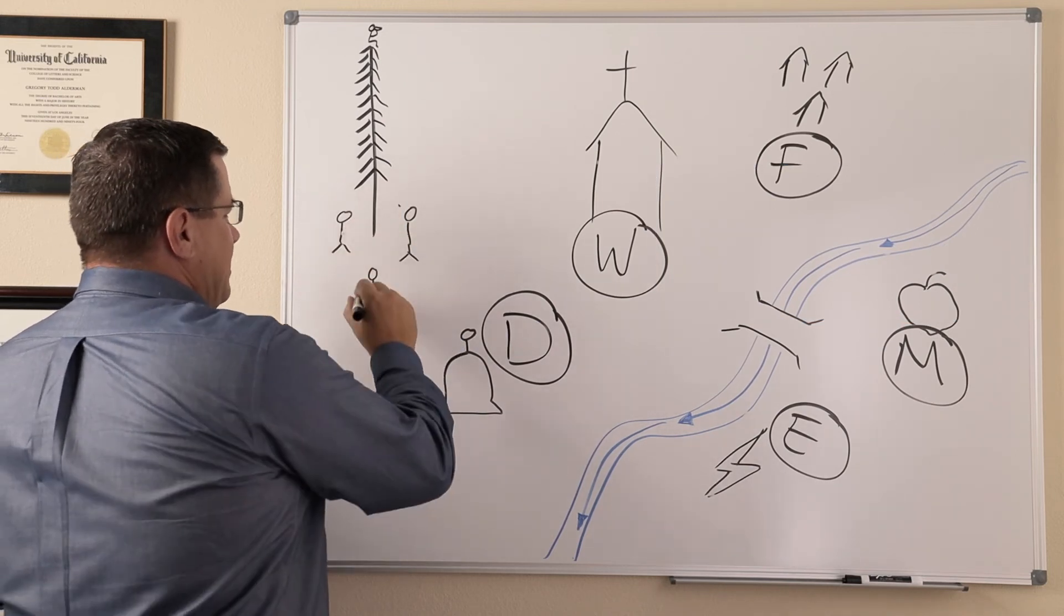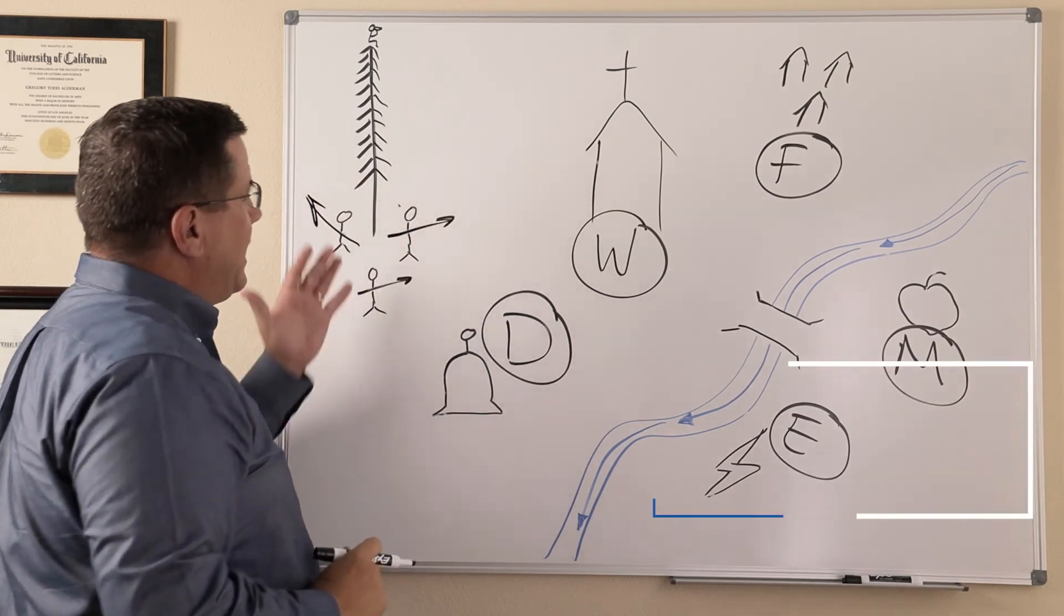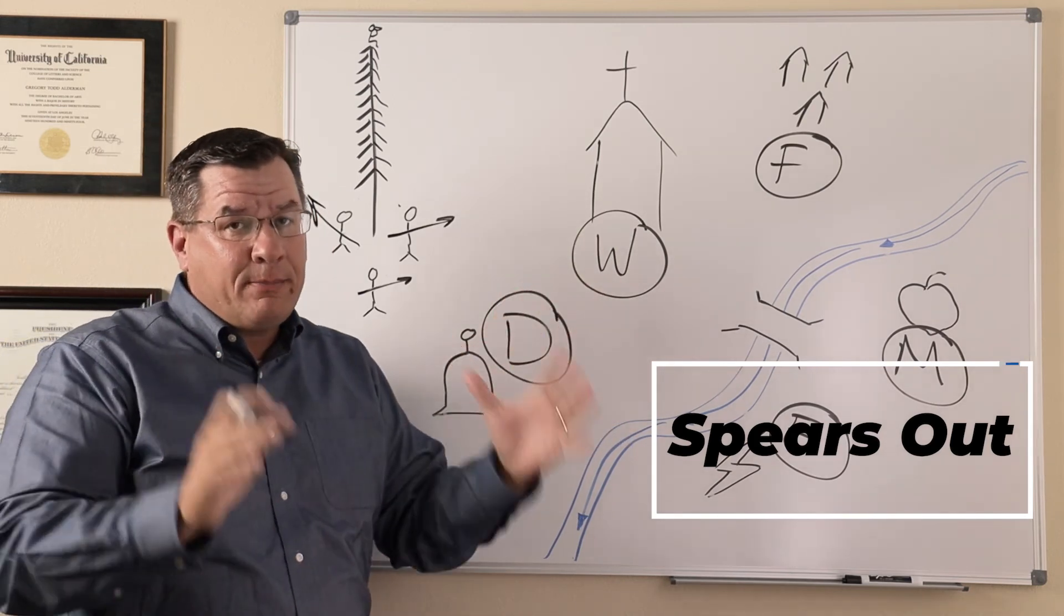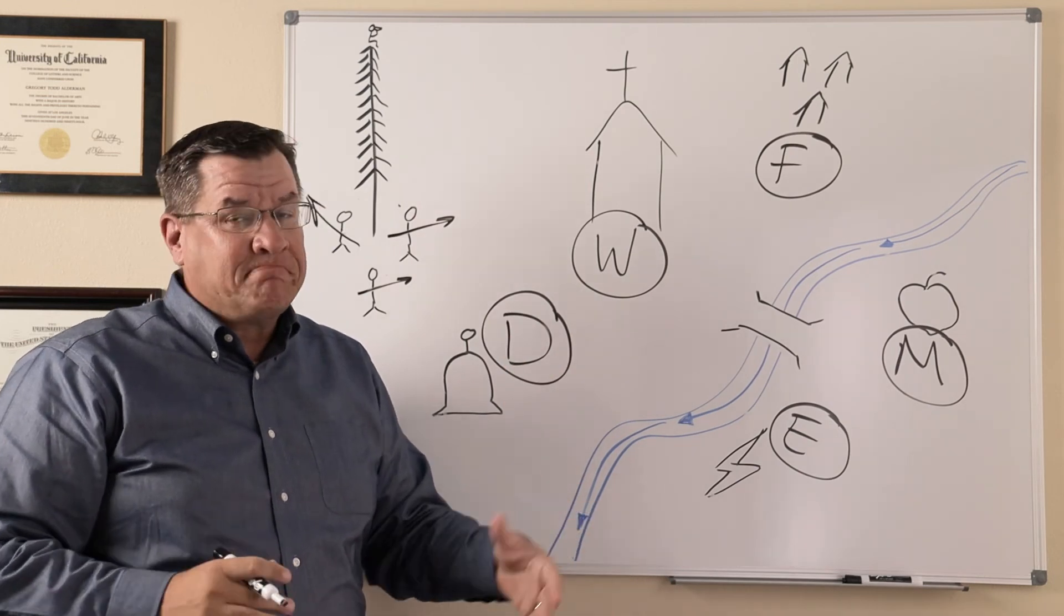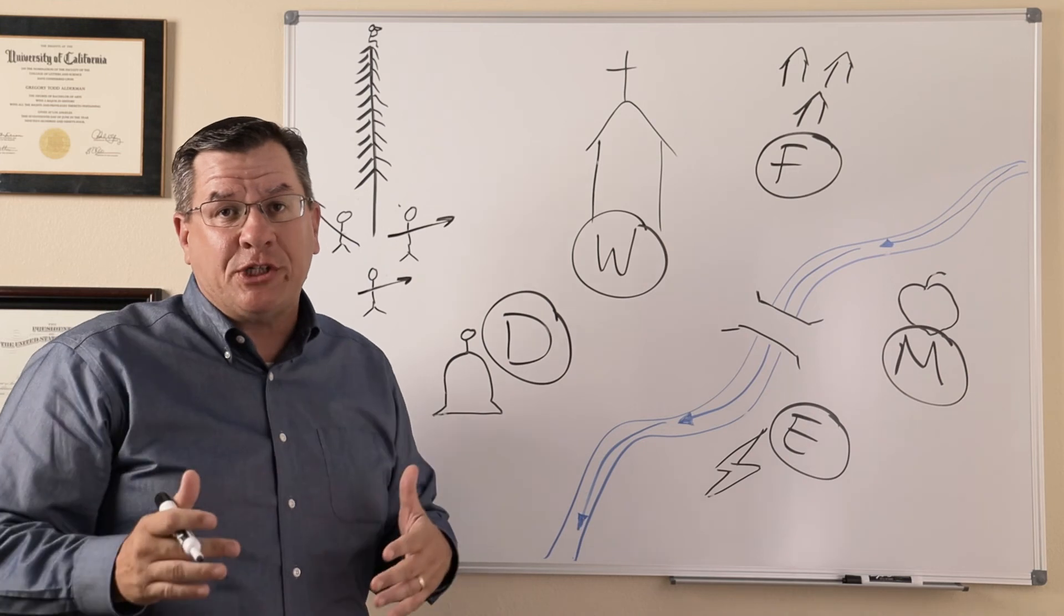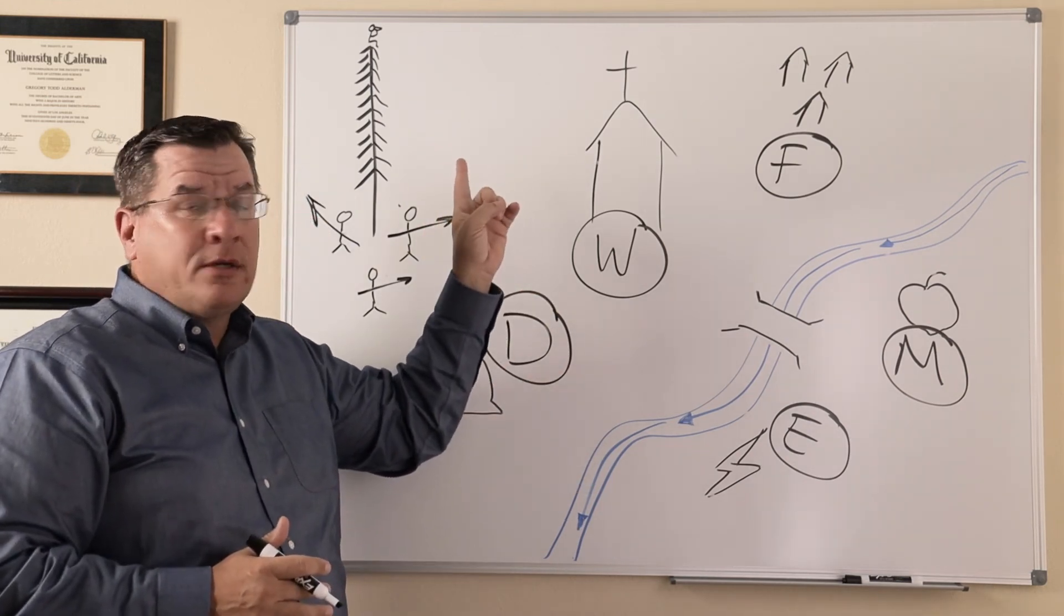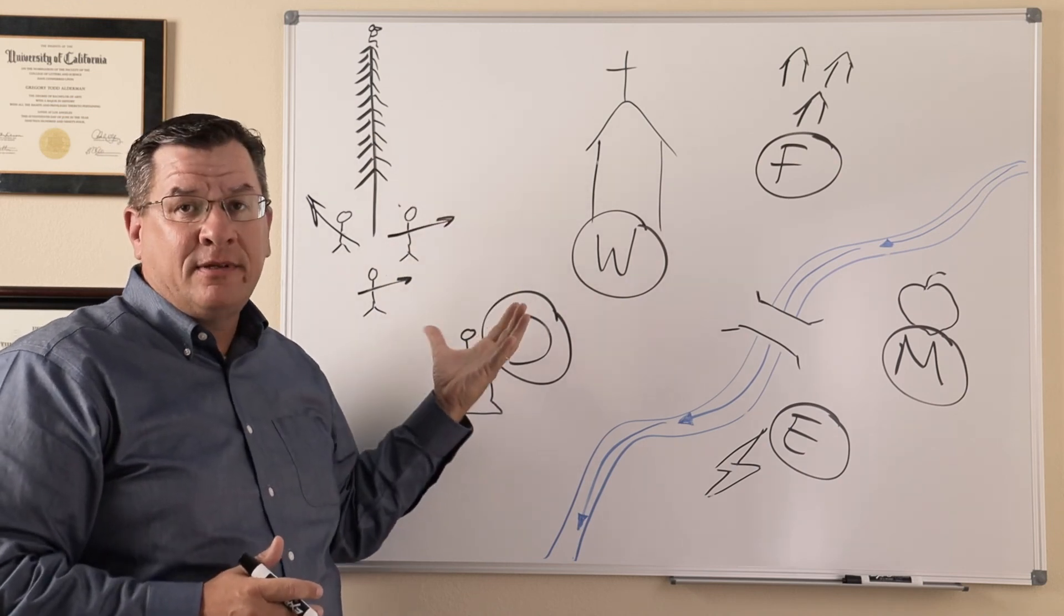But we also know the tribal elders do something else super important. They also protect the pastor. And they have spears out. Because every once in a while, people in the church grumble. Sometimes they grumble for the right reasons. Sometimes they grumble for the wrong reasons. I'll let you decide which constitutes which. But when the pastor's up the tree, doing what he's supposed to be doing, he needs to be protected. Spears out.